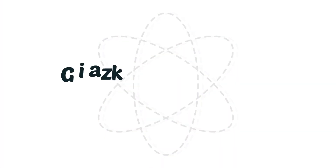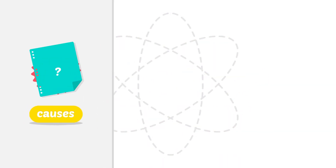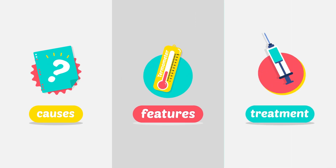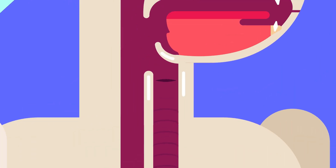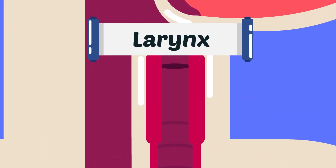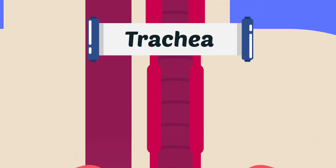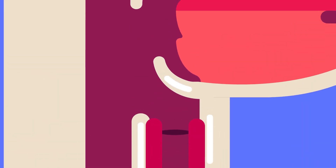Acute laryngotracheobronchitis: Causes, Features, Treatment. What is acute laryngotracheobronchitis? It is an inflammatory condition of the larynx, trachea, and bronchi, and is more common than acute epiglottitis.